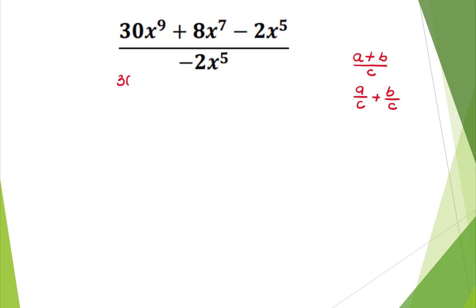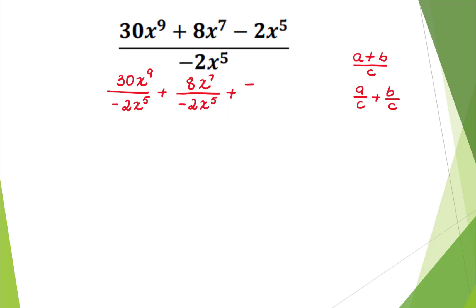We'll get 30x to the 9th divided by negative 2x to the 5th, plus 8x to the 7th divided by negative 2x to the 5th, plus negative 2x to the 5th divided by negative 2x to the 5th.